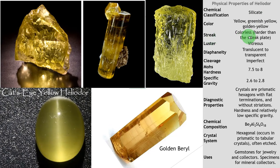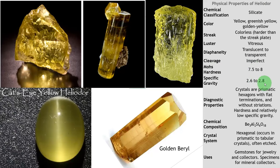Streak is colorless — harder than the streak plate. Luster is vitreous. Diaphaneity is translucent to transparent. Cleavage is imperfect — when broken it is not a perfect cleavage. Hardness is 7.5 to 8. Specific gravity is 2.6 to 2.8 — very light mineral. Crystals are prismatic hexagons with flat terminations and without striations. Diagnostic properties: see the shape, hardness, and relatively low specific gravity. Chemical composition: beryllium aluminum silicate.